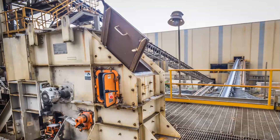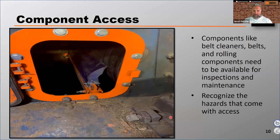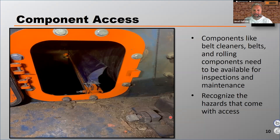If you look at the door on the bottom, you can see that rubber seal around the outside and a latch that's going to keep that door shut, keep air out of that transfer point, and reduce dust on the other end. You want to make sure that components like belt cleaners, belts, and any rolling component that might be sealed off with chute work are available for maintenance and inspection.